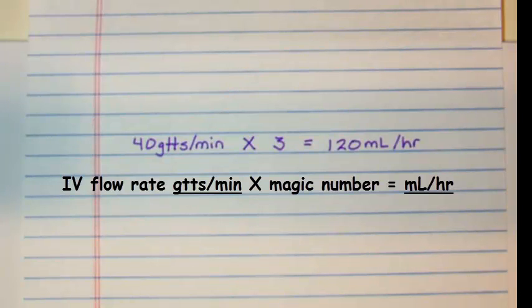Because the tubing is rated at 20 and 20 goes into 60 three times, our magic number is 3, which would result in 120 milliliters per hour as our new infusion rate by pump.